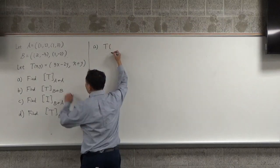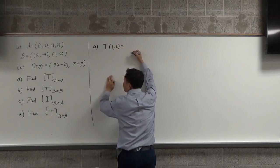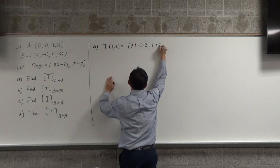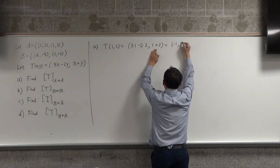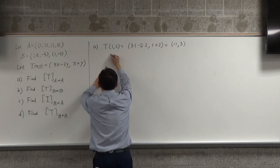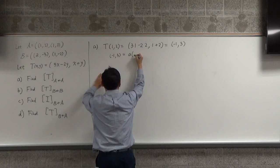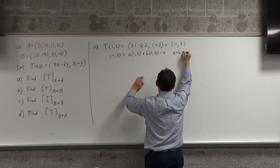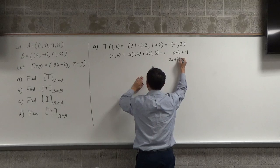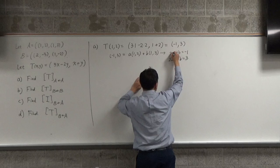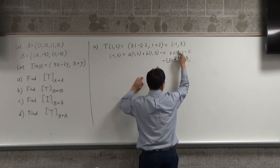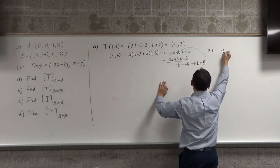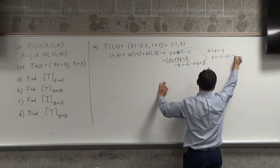So let's see where T applied to the very first basis element goes to. So T(1,2) is what? It'll be 3 times 1 minus 2 times 2, 1 plus 2, and that's negative 1 comma 3. And now you have to represent negative 1 comma 3 as a linear combination of (1,2) and (1,3). So that A plus B would be negative 1, and then 2A plus 3B is equal to 3.